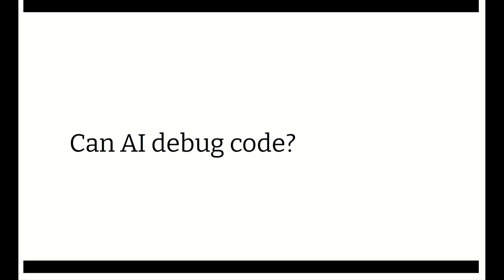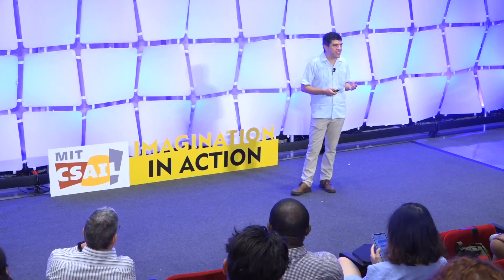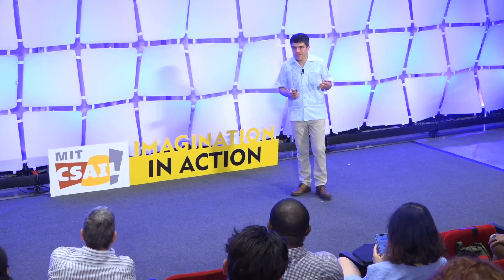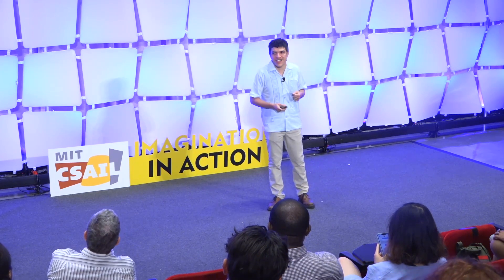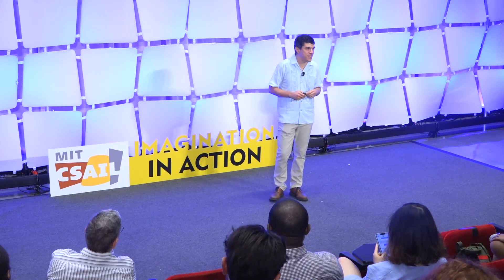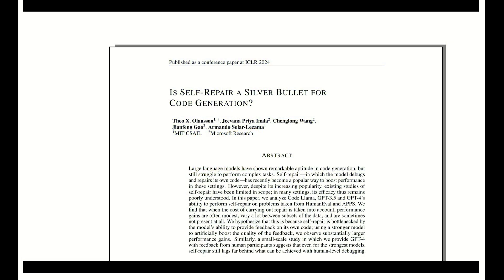But when you look at this question, you first have to ask, how do we know that it's actually debugging the code or that it's actually any good at it? And a good baseline to compare it is what happens if you just ask the model from scratch to generate another solution? Maybe it just rolled the dice and got the wrong answer once, and then you roll the dice again, and it gets the right answer the next time.